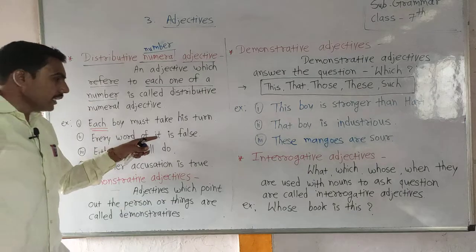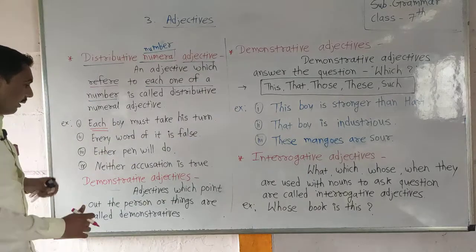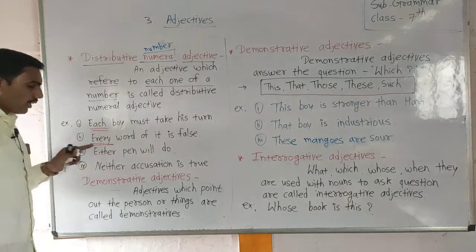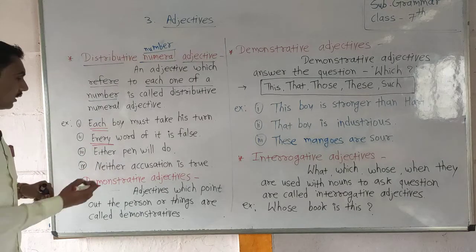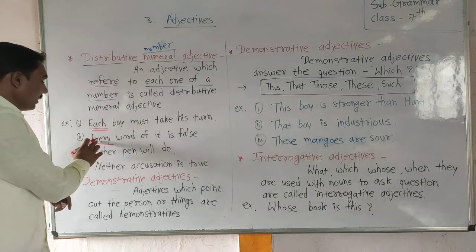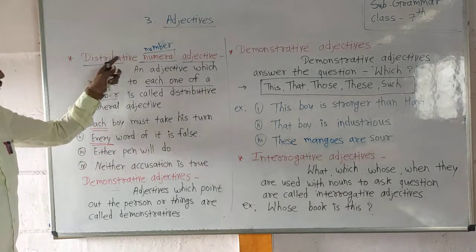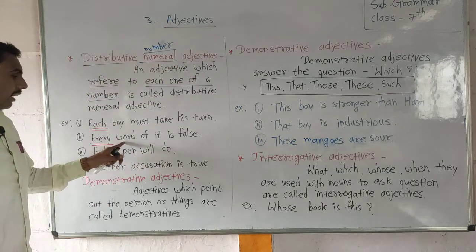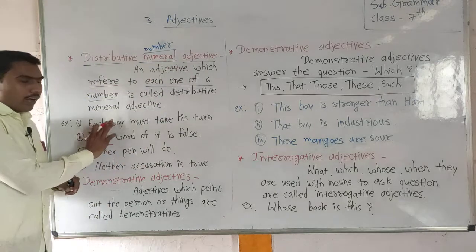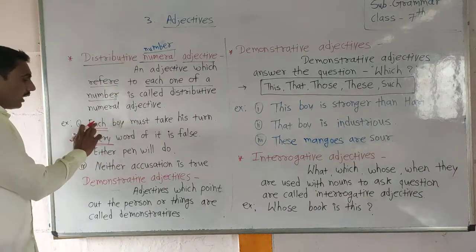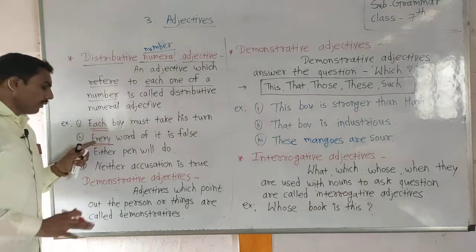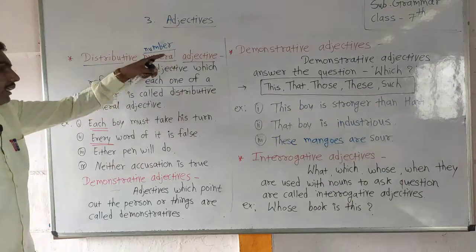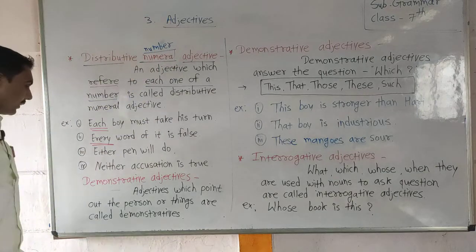'Every word of it is false.' Here, the word 'every' indicates each one — every word. 'Every' is the distributive numeral adjective, and 'word' is the noun it modifies. So 'every' is a distributive numeral adjective.